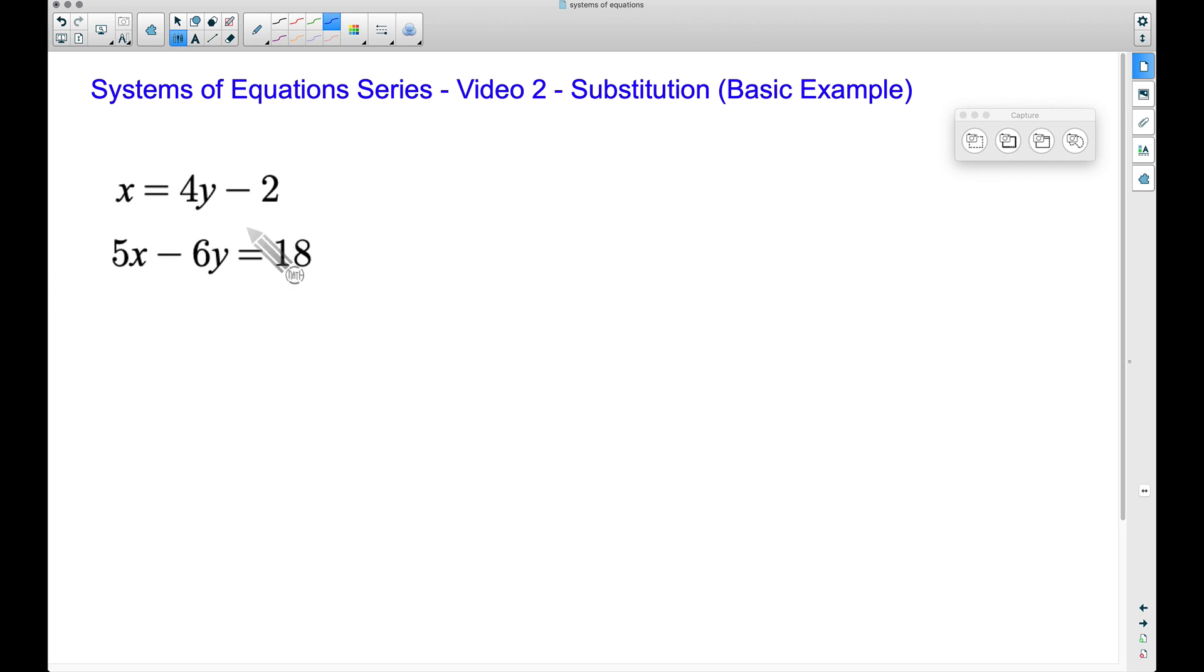One technique is called the substitution method. There are other methods that we'll discuss later, but the substitution method is a great candidate for this particular problem because we have a variable by itself. Notice we have X equals 4Y minus 2.